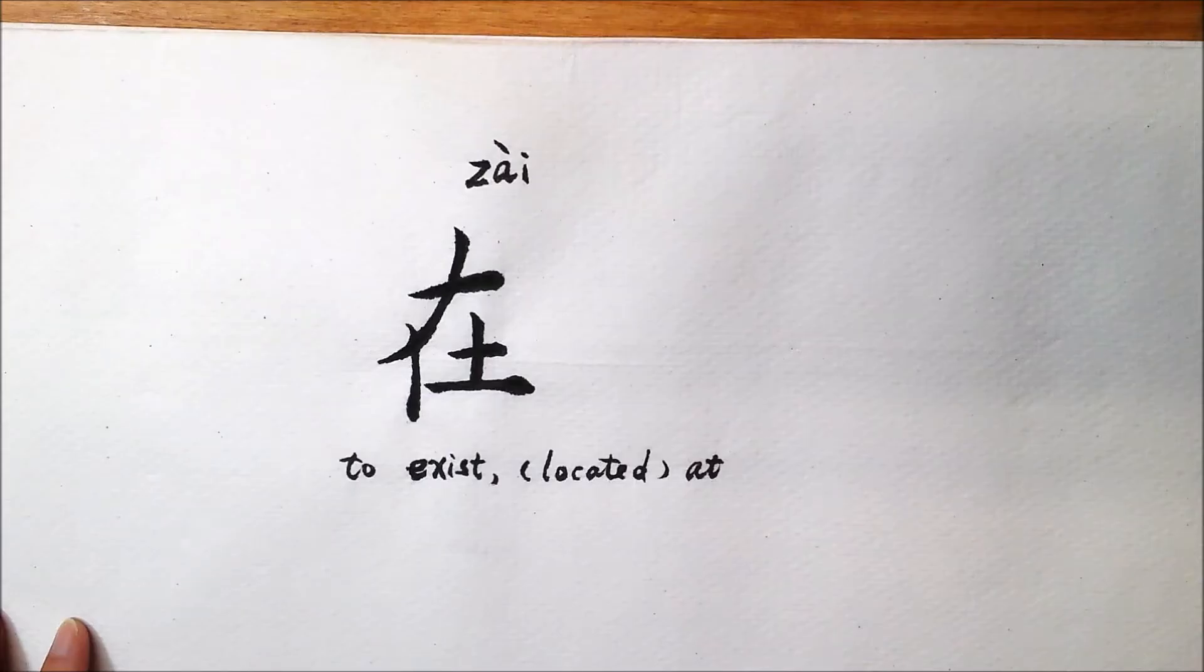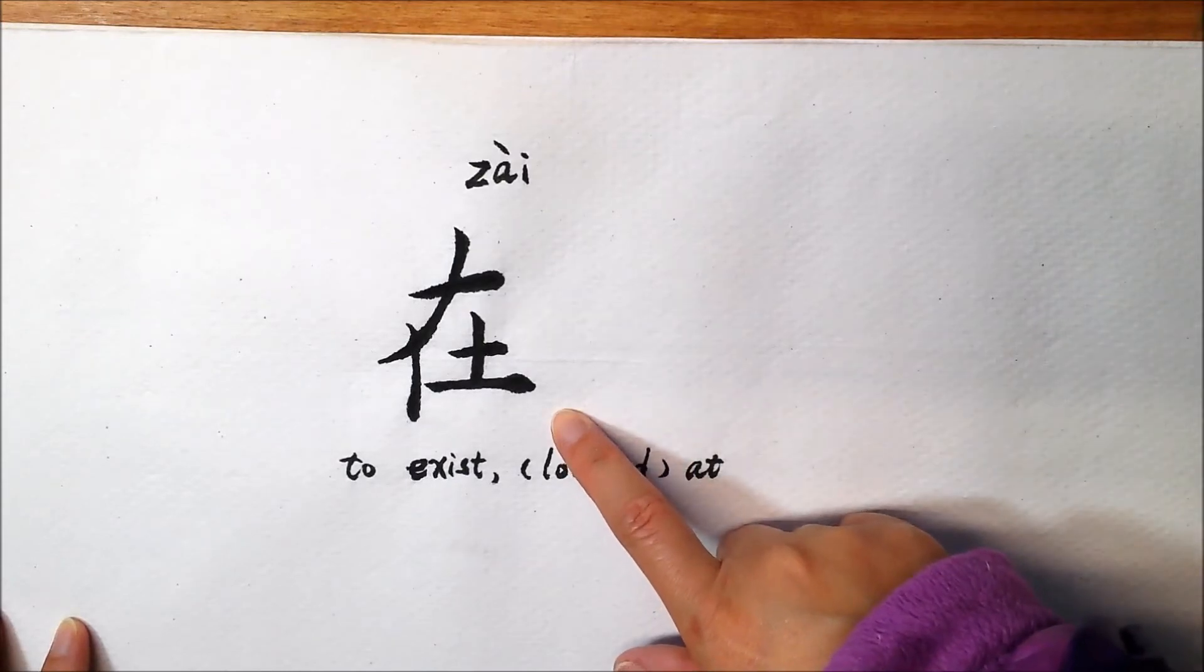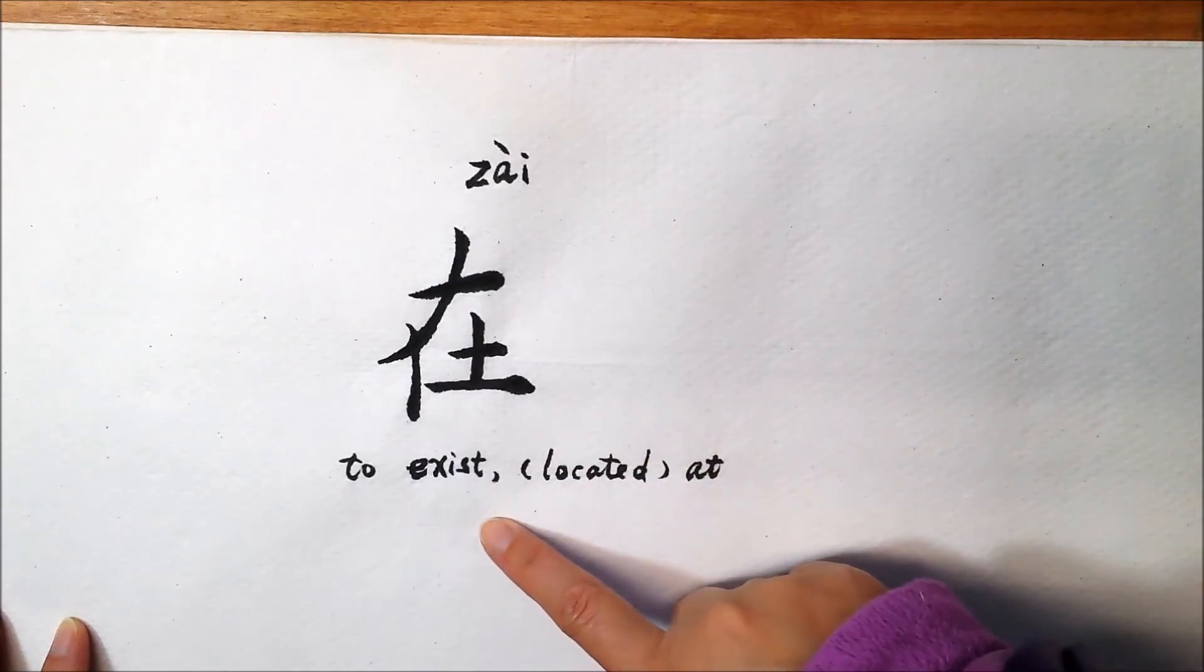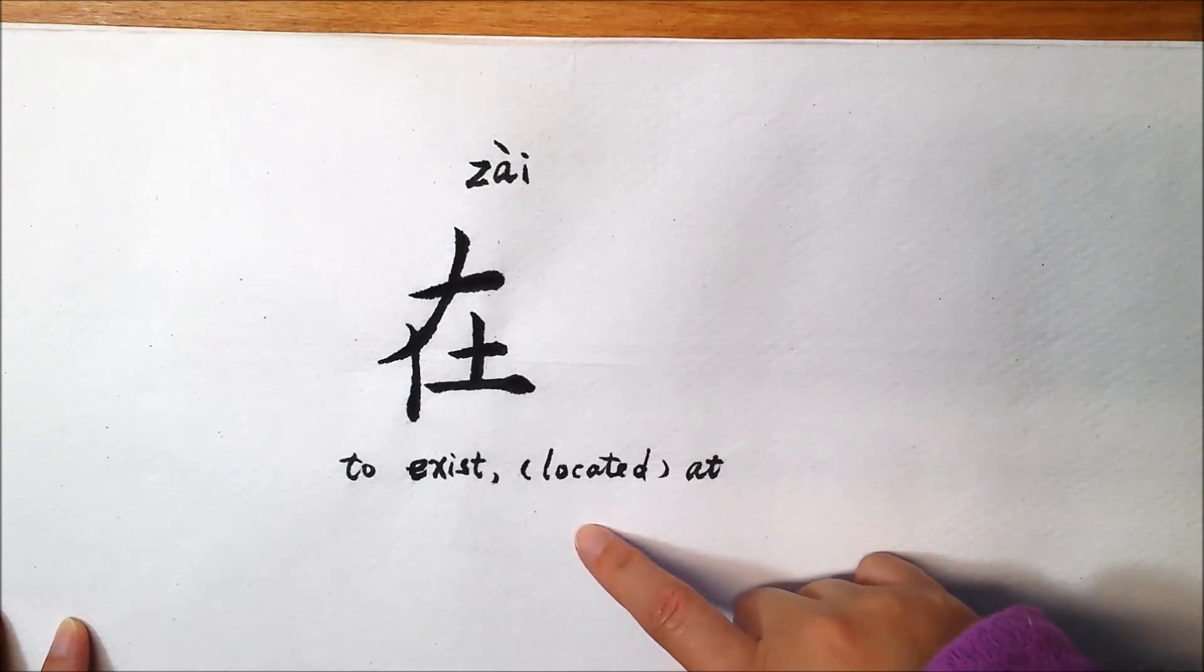Good morning! In this video, we are going to talk about character Zai. Zai, it means to exist or located at.